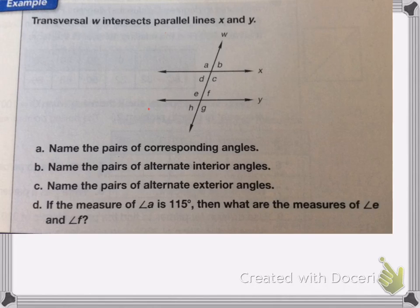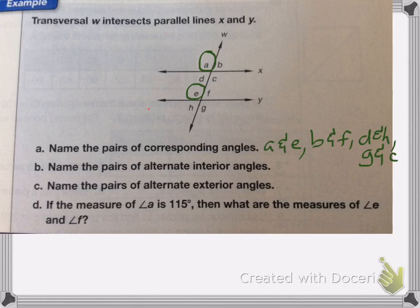So the first one says name a pair of corresponding angles. Now, corresponding angles are two angles that are in the same relative position. For example, A and E, they're both in the upper left quadrant of our drawing. So A and E are corresponding angles. But it wants me to list all of them. So A and E are the first ones, then B and F, D and H, and G and C are all corresponding angles because they're in the same location.